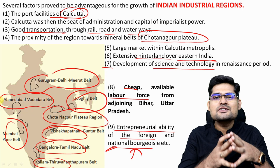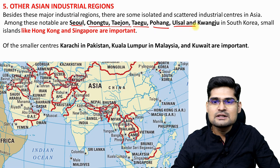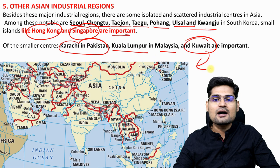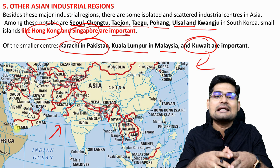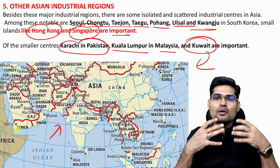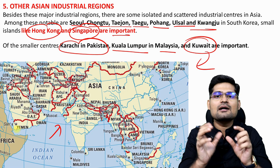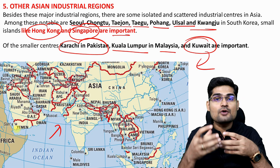Other major Asian industrial hubs include Seoul, Chongju, Daejeon, Daegu, Pohang, Ulsan, and Hong Kong and Singapore. Outside East Asia, Karachi in Pakistan, Kuala Lumpur in Malaysia, and Kuwait are notable centers. This covers the distribution across Asia beyond China and India. Understanding the world pattern — including which regions specialize in which products — can be mapped out through geographic study.